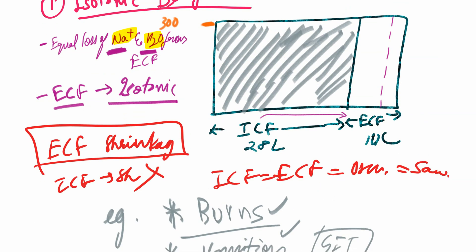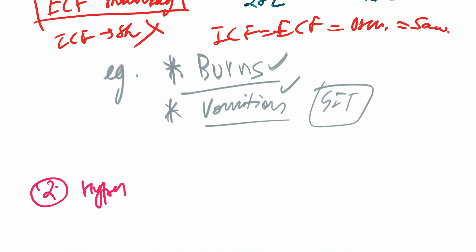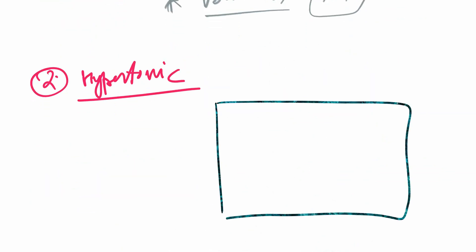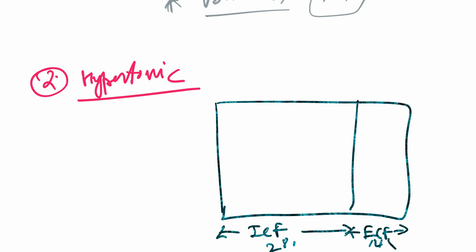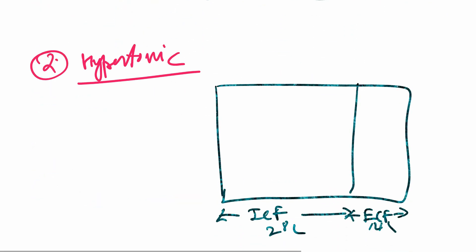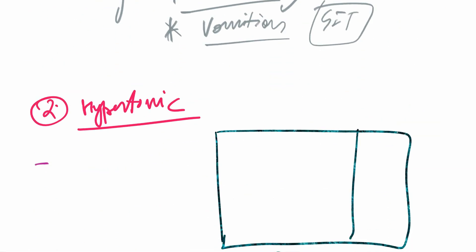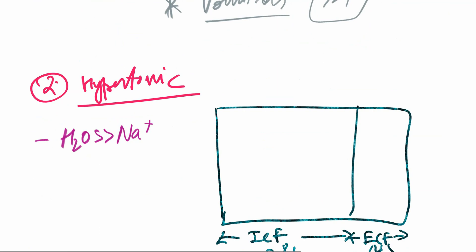Moving on to the second type of dehydration — the hypertonic type. Again constructing the body compartments: extracellular fluid at 14 liters and intracellular fluid at 28 liters. In hypertonic dehydration, there is more loss of water than sodium. As there is more water loss, there is subsequent shrinkage of the extracellular fluid compartment, and the extracellular fluid compartment osmolarity increases, becoming hypertonic.